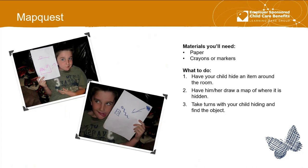MapQuest: materials you'll need are paper, crayons, and markers. This works better with older children. Have your child hide an item around the room, then draw a map of where it's hidden. Take turns hiding and finding the object. With young children, they'll draw some marks on their paper and that's okay — that's their map. You'll walk around and look at the map to see if you can find it. Really, what they draw doesn't matter. It's about the interactions and the fun time you're having with them.